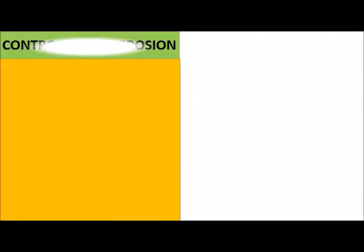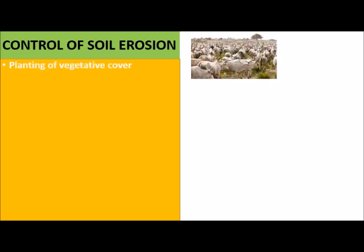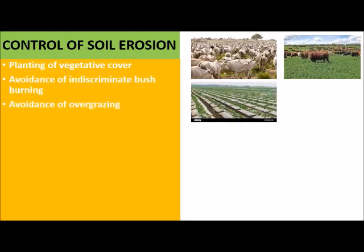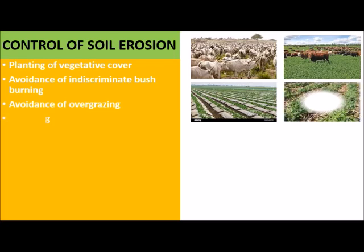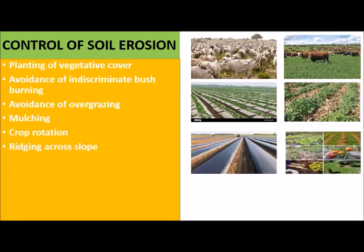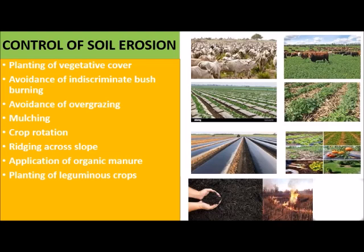Control of soil erosion: planting of vegetative cover helps in controlling soil erosion. Avoidance of indiscriminate bush burning. Avoidance of overgrazing. Mulching also helps. Crop rotation helps in preventing or controlling soil erosion. Ridging across slopes. Application of organic manure. Planting of leguminous crops. And lastly, education.